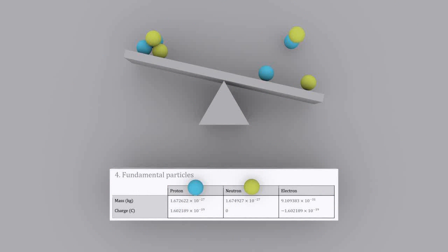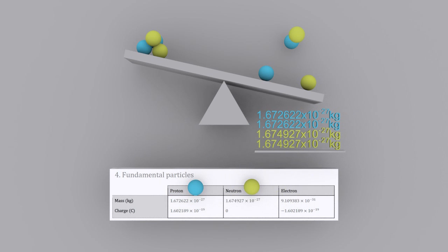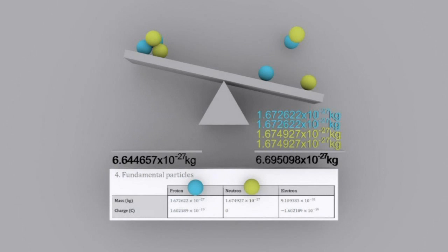So looking at the helium nucleus on the left of the balance and the four nucleons that make it up, two protons and two neutrons on the right of the balance, you can see that the nucleus itself is lighter. And by looking at the table of the fundamental particles in the data booklet, we can do the calculation. So I've got two protons and two neutrons which gives me that total mass there.